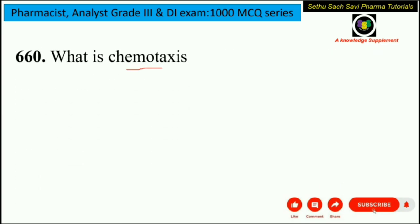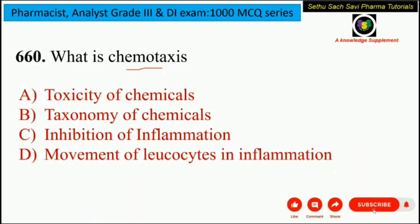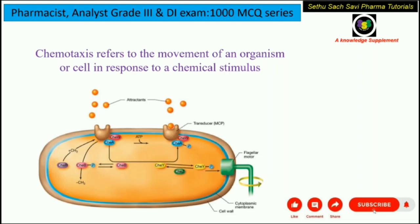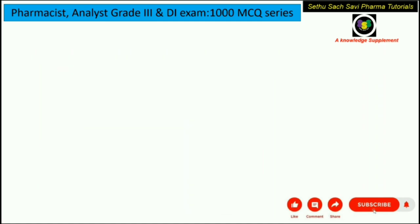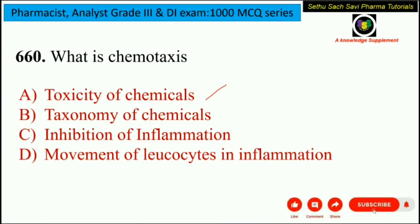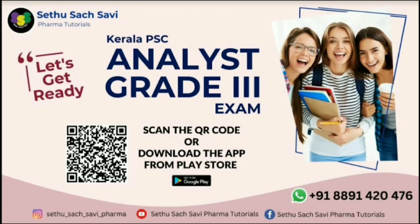Last question of the day: what is chemotaxis? Is it the toxicity of chemicals, taxonomy of chemicals, inhibition of inflammation, or movement of leukocytes in inflammation? Chemotaxis refers to the movement of an organism or cell in response to a chemical stimulus. It is not toxicity or taxonomy of chemicals, nor inhibition of inflammation — it is the movement of cells such as leukocytes in inflammation in response to a chemical stimulus. So option D is the correct answer. This is our exclusive course for Kerala BSc Analyst Grade 3 examination. Hope you enjoyed the video, thank you.